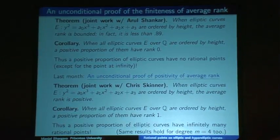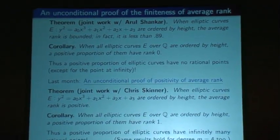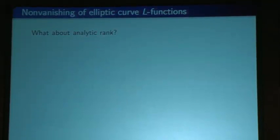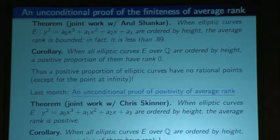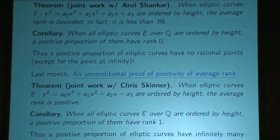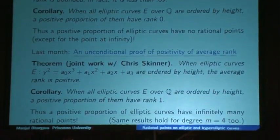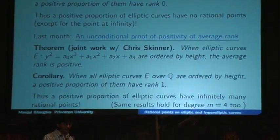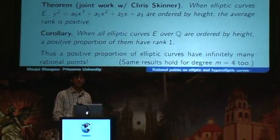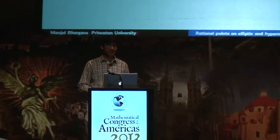I mentioned the Birch–Swinnerton-Dyer conjecture earlier. If we assumed BSD plus the generalized Riemann hypothesis, we could make many of these kinds of deductions, which we are now able to do unconditionally. And since we're able to do so unconditionally, we can ask what these results say about the Birch–Swinnerton-Dyer conjecture in return.